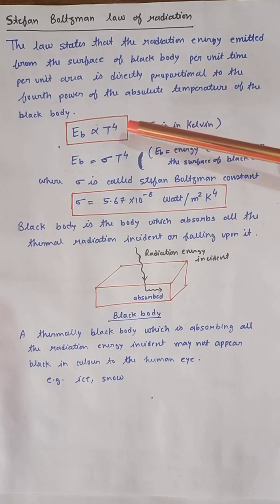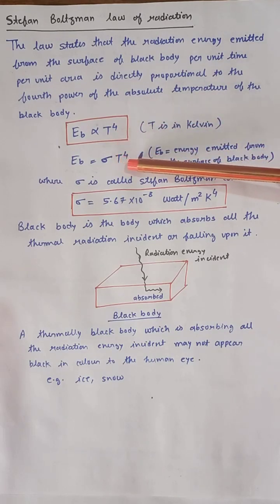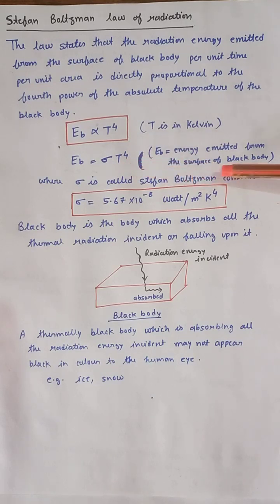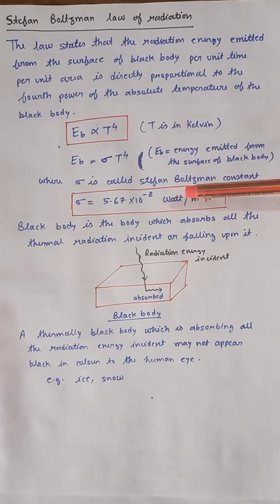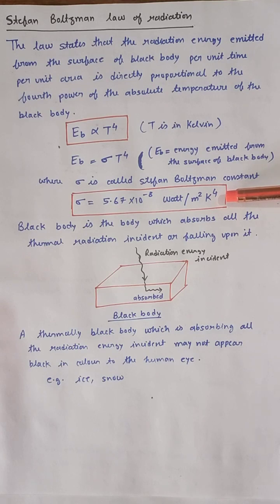On removing proportionality, we get Eb equal to sigma T to the power 4, where sigma is called the Stefan-Boltzmann constant and the value of sigma is equal to 5.67 into 10 to the power minus 8 watt per meter square Kelvin to the power 4.